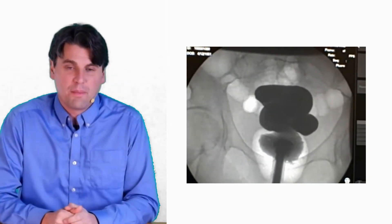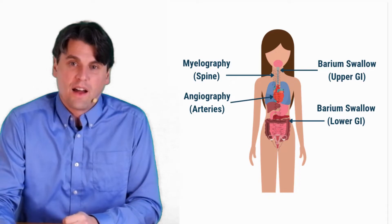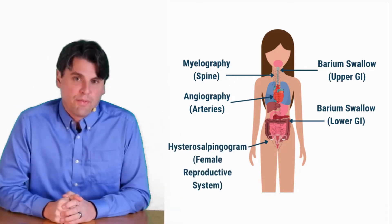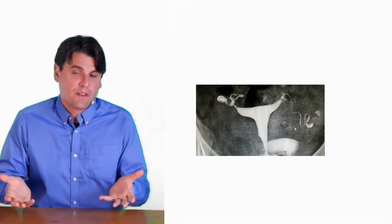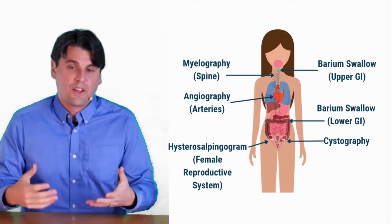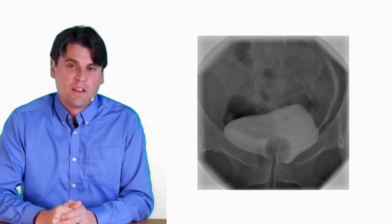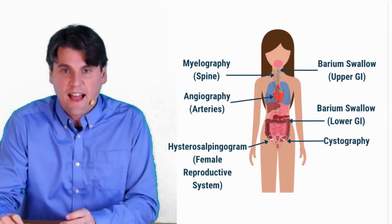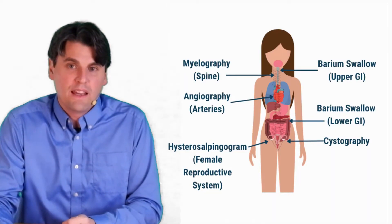So the colon, for instance, can be well visualized with barium. You can also image for the reproductive system within females. You can look for cysts in the urinary tract as well. So these are all examples of diagnostic fluoroscopy in use.